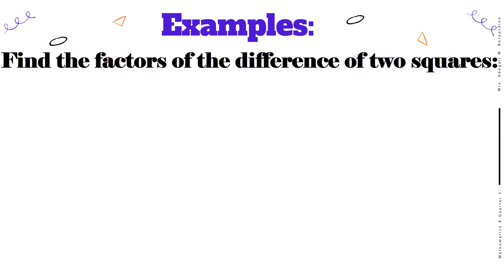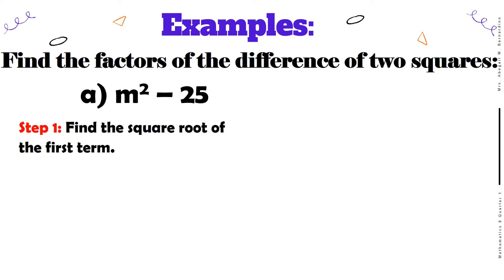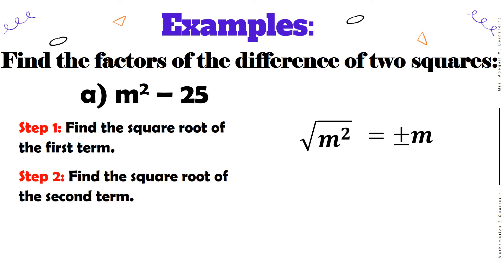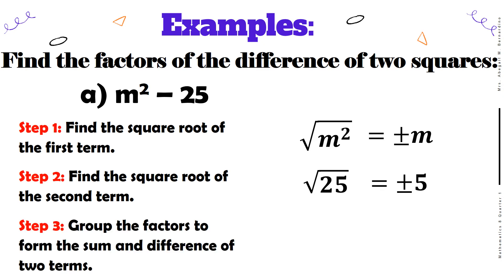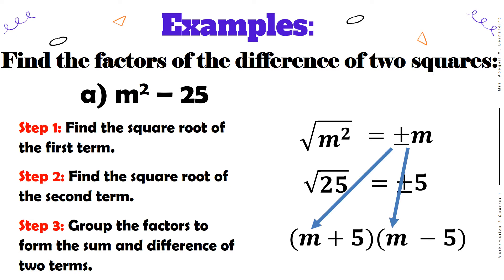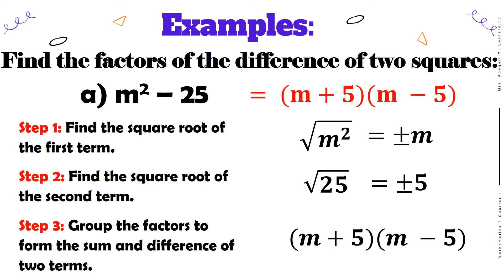Let's try answering the examples. Find the factors of the difference of two squares. We have m squared minus 25. In step 1, find the square root of the first term, which is m squared — its square root is positive or negative m. For step 2, find the square root of the second term, which is 25 — the answer is positive or negative 5. Using these square roots, we form the sum and difference: the first terms of the binomials are m, and the second terms are positive 5 and negative 5. The answer is the quantity m plus 5 times the quantity m minus 5.